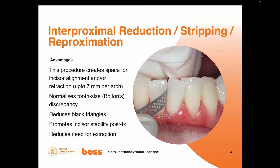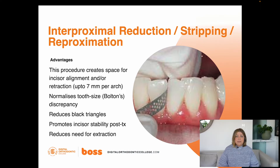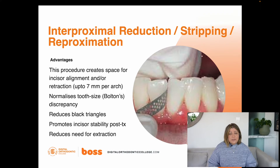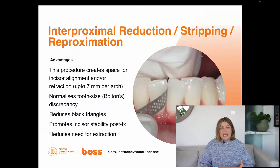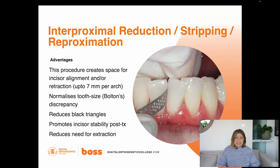Why use IPR over extractions? There are many advantages. Not only can it create space up to seven millimeters per tooth, but many people have Bolton's discrepancy, meaning their tooth sizes are not in proportion between the maxillary and mandibular jaws. IPR helps normalize Bolton's discrepancy, which often leads to a better finished result — achieving good finishing for cases and ending up with class one incisors, which are especially difficult when there's a tooth size discrepancy.